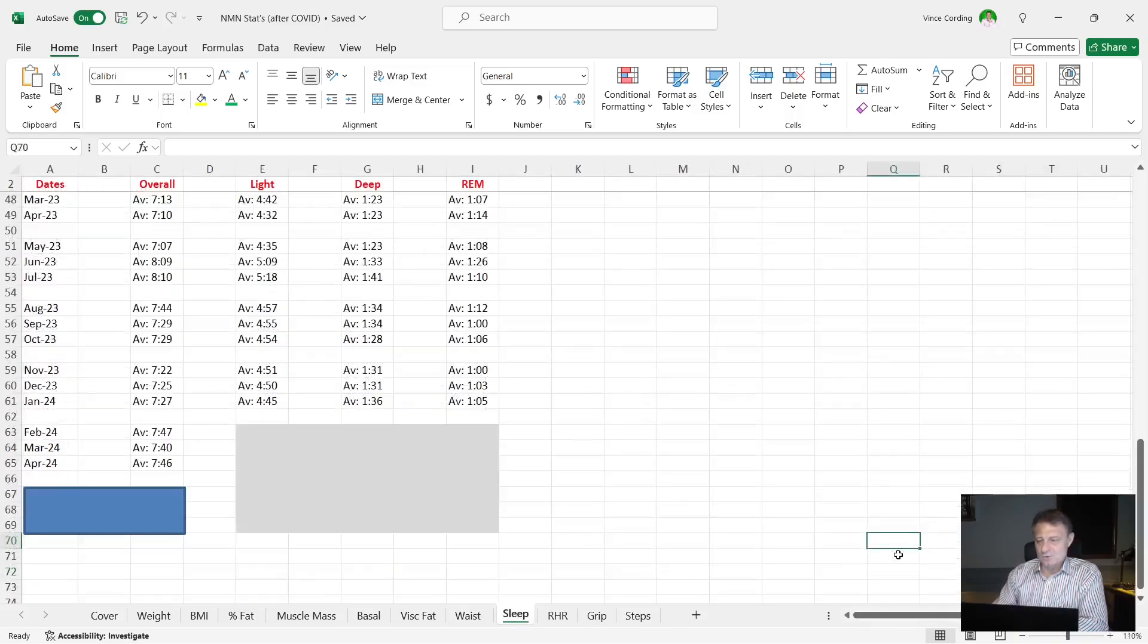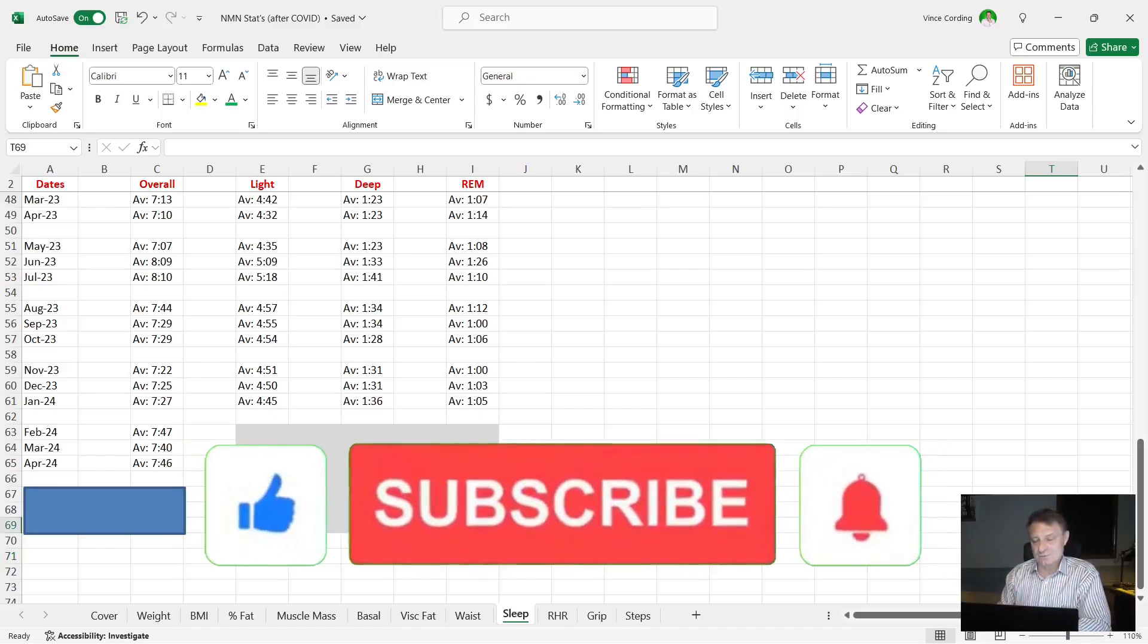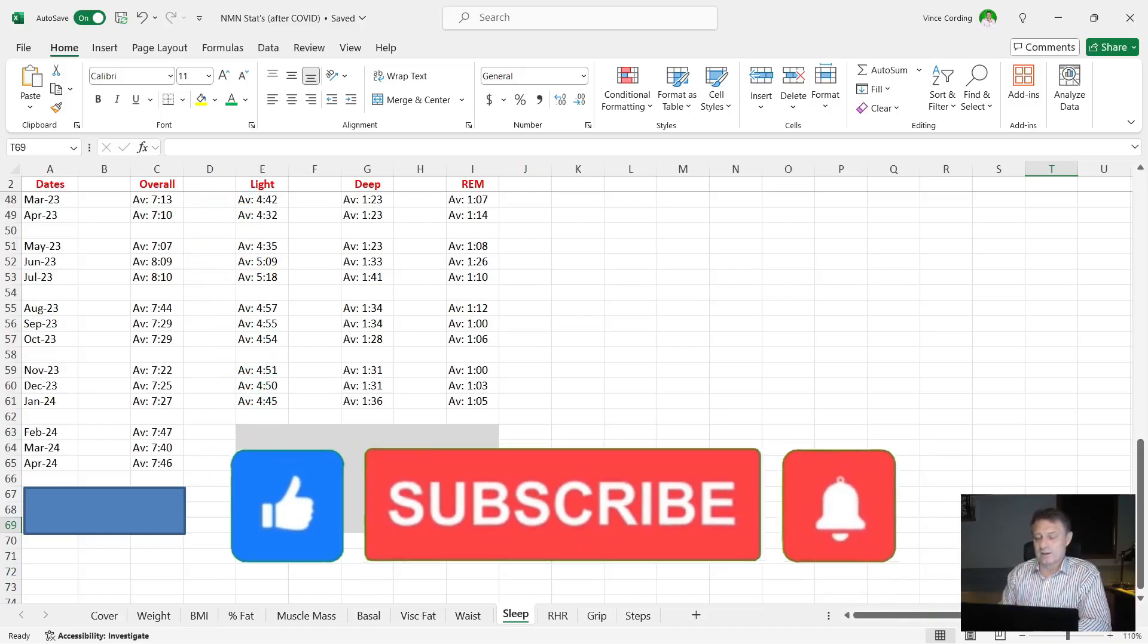Then we've got my sleep scores. Now you'll see here that I'm not now recording my monthly score for light, deep and REM because my Ultrahuman ring and my Mi Band 8 do not give me monthly stats. The only thing they give me regarding monthly stats is overall sleep. That said, if you are a subscribed member to the YouTube channel, you'll know that in the community tab I post pretty much every morning what my sleep scores were for the night before.